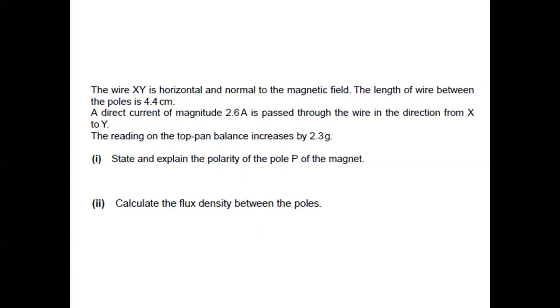The reading on the top pan balance increases by 2.3 grams. For the questions: state and explain the polarity of pole P of the magnet and calculate the flux density between the poles.